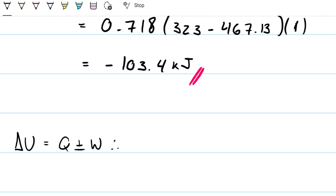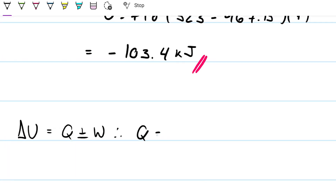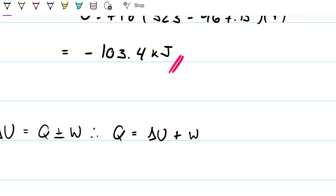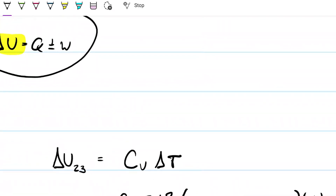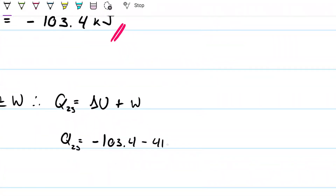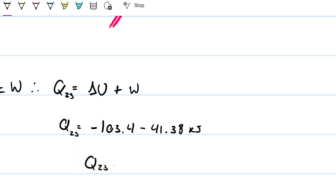The first law gives us ΔU equals Q minus W, so Q from 2 to 3 equals negative 103.4 minus 41.38 kilojoules, which gives Q from 2 to 3 equal to negative 144.8 kilojoules.